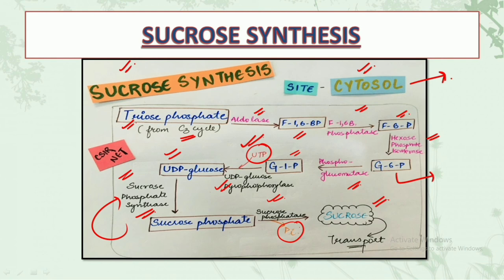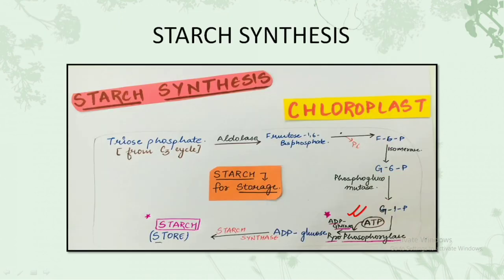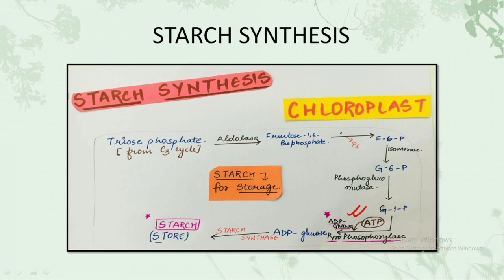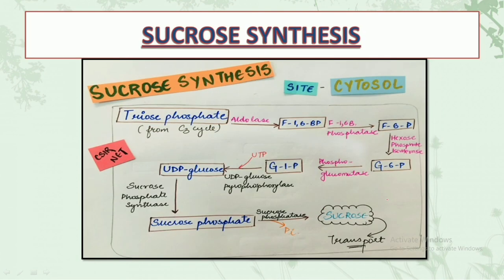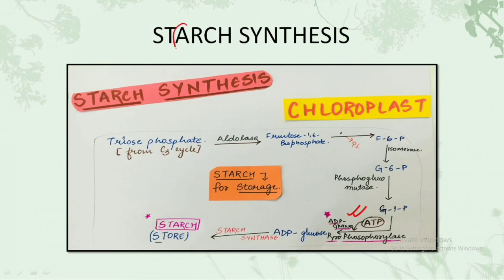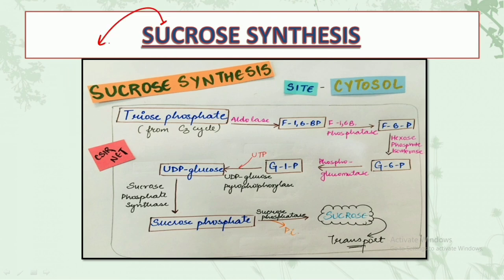These were the two key pathways: starch synthesis and sucrose synthesis. You can make these diagrams in your notebook and revise them once or twice. A helpful memory tip: in the spelling of sucrose, the letter 'U' is present, so UTP is used. In starch, the letter 'A' is present, so ATP is used. If you remember one, the other is its opposite. Remembering sucrose is easiest because of the 'U' - just remember UDP glucose is formed.